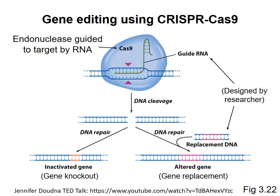Without the guide RNA, Cas9 will not cut DNA. This means that researchers can direct Cas9 to cut DNA at specific sites by providing an appropriate guide RNA. The guide RNA is about 30 nucleotides long, and contains about 20 nucleotides that specify the site at which Cas9 will cut the DNA.